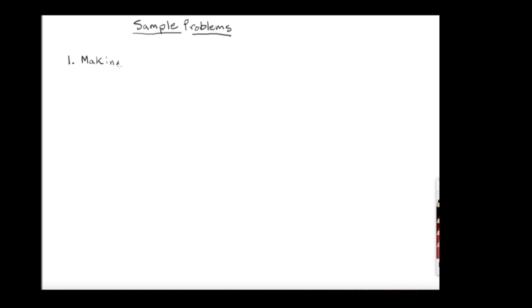Question number one: identify the following processes as endothermic or exothermic. Problem number one just says 'making ice.' We're going to draw a picture using boxes. We'll have a big outer box and inside it we're going to have some H2O, and we're going to call the inner box our system — this is the water that we want to make ice out of.